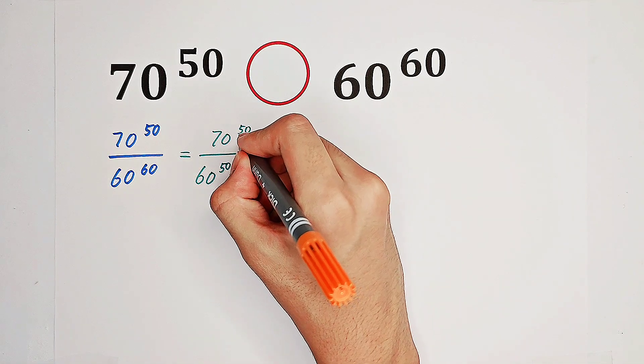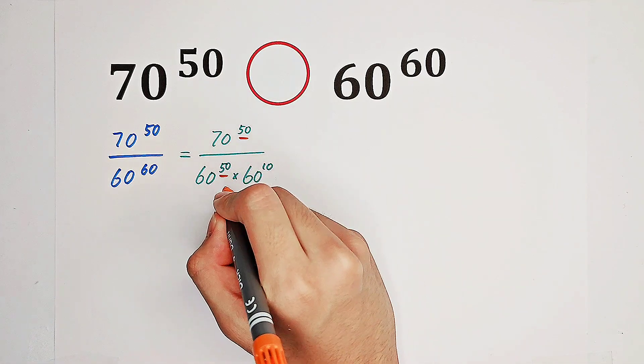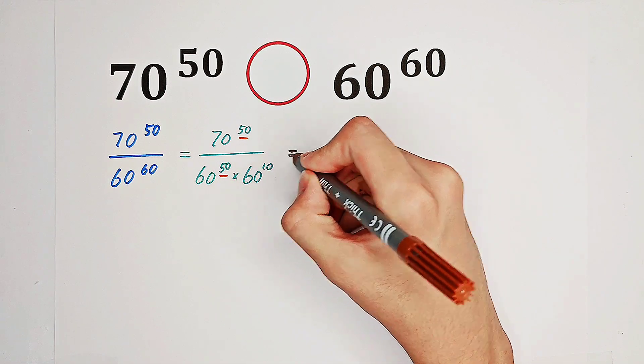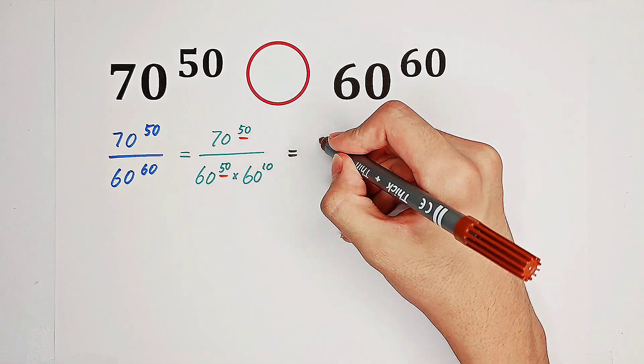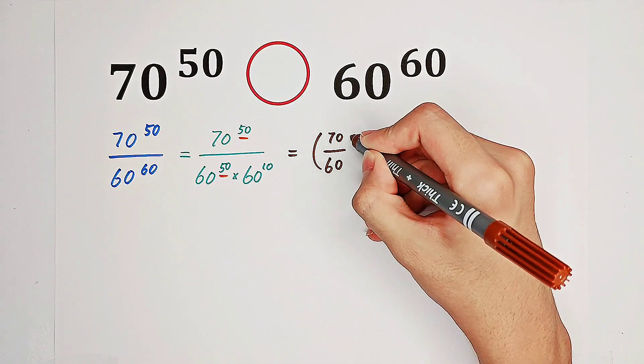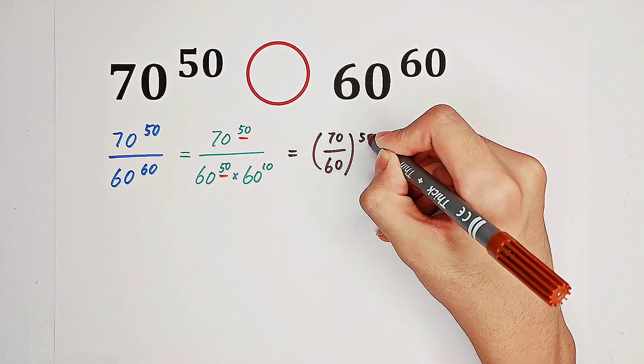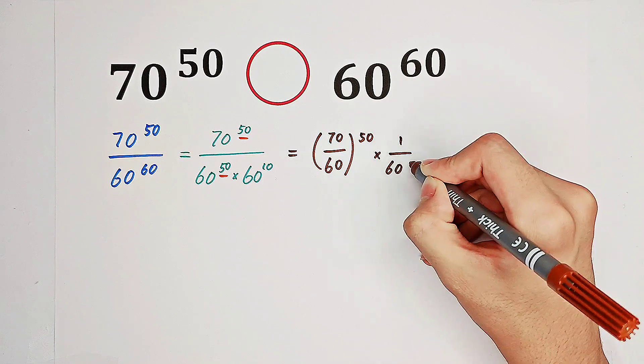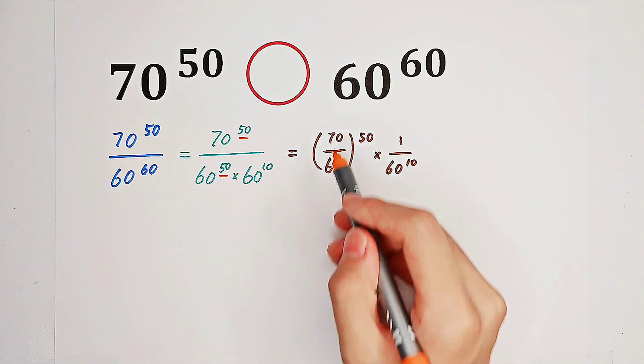Because therefore, we have 50 here, and we also have 50 here. So this can be actually written as 70 over 60, all to the power of 50, then times 1 over 60 to the power of 10.